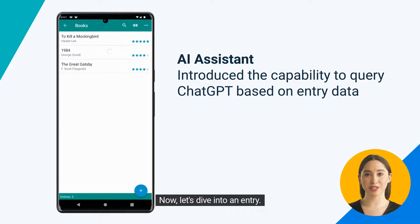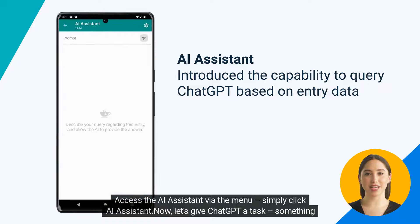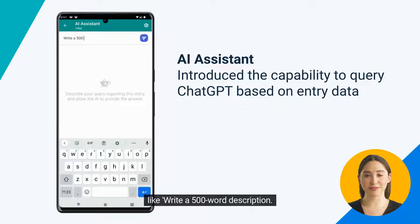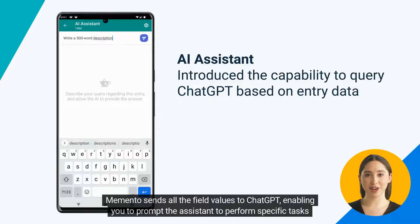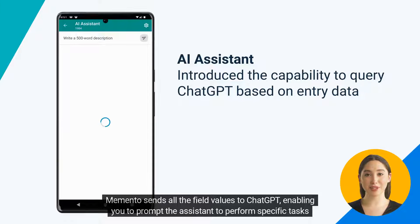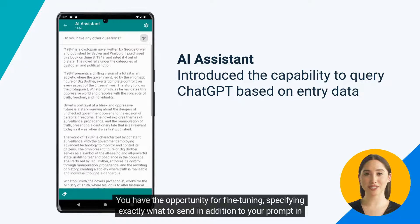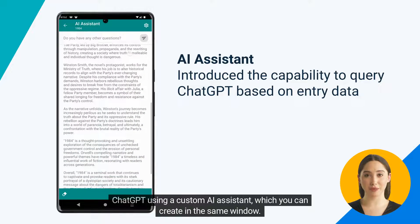Now let's dive into an entry. Access the AI assistant via the menu — simply click AI assistant. Now let's give ChatGPT a task, something like "write a 500-word description." Memento sends all the field values to ChatGPT, enabling you to prompt the assistant to perform specific tasks with your data. You have the opportunity for fine-tuning, specifying exactly what to send in addition to your prompt in ChatGPT, using a custom AI assistant which you can create in the same window.